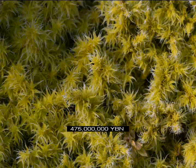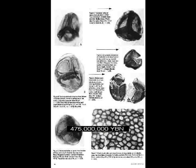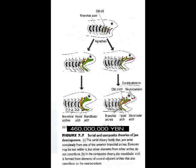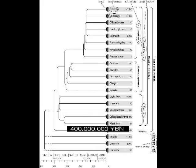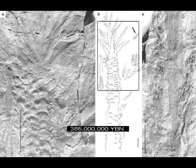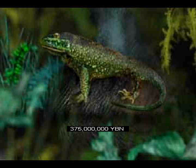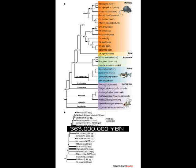Non-vascular plants: liverworts, mosses. Plants live on land. Jawed vertebrates. First tooth. Lung. Animals live on land. Arthropods. Vascular plants. First forests. First tetrapods: organisms with four feet. The amphibians. First limbs: arms and legs, and fingers. Vertebrates live on land.